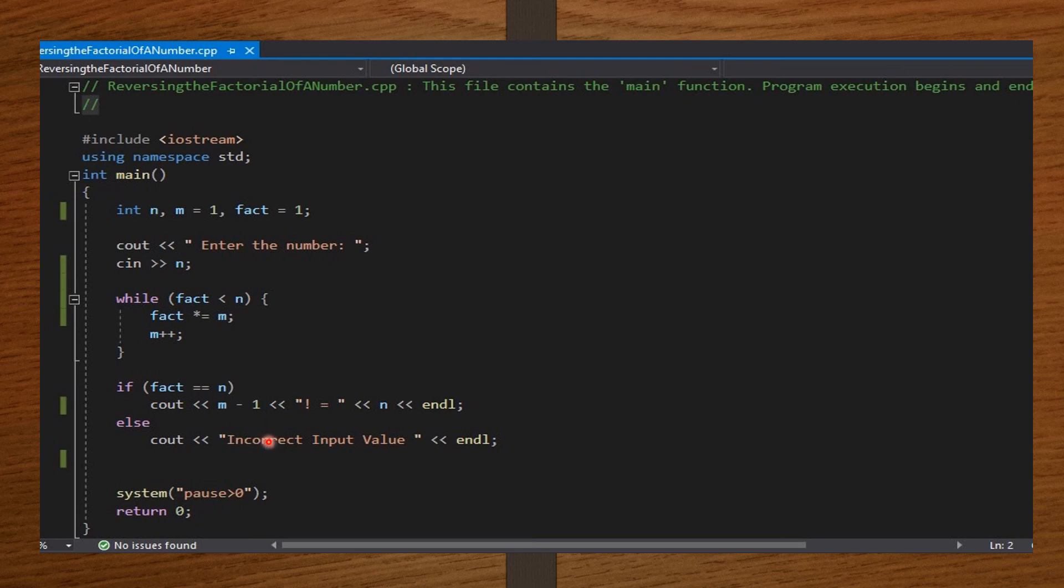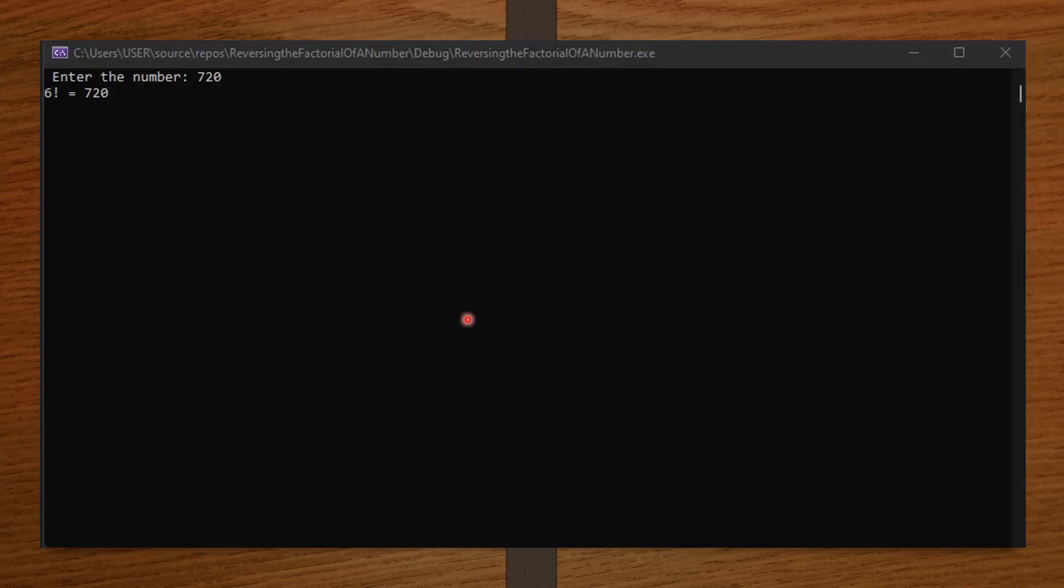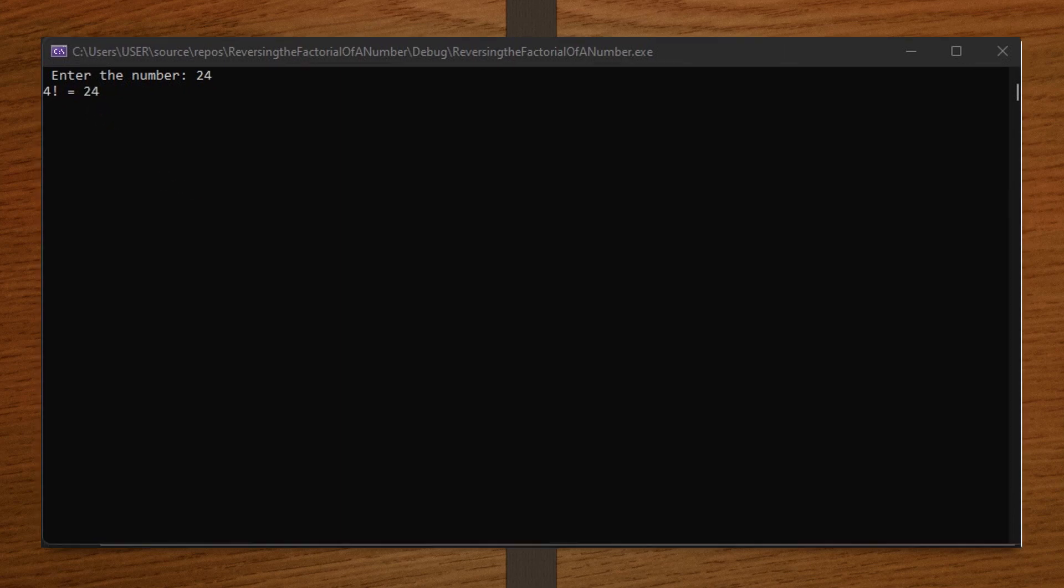Let me input some values for N and then we see how the code works. So, I entered the same value 720 and it says that 6 factorial is equal to 720. So, you see why we subtracted 1 from the M. It would have been 7 factorial. So, 7 minus 1 gives us 6. So, 6 factorial is 720. Let's input another value, let's say 24. So, you see that 4 factorial equals 24. So, our code is running properly.